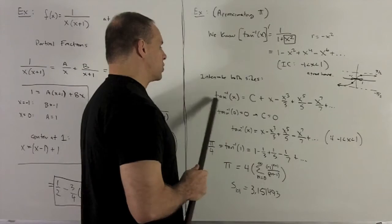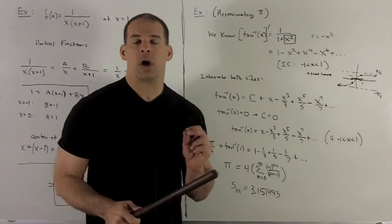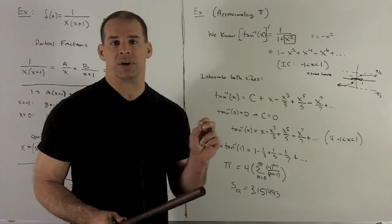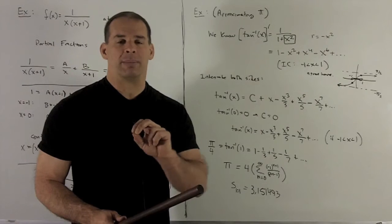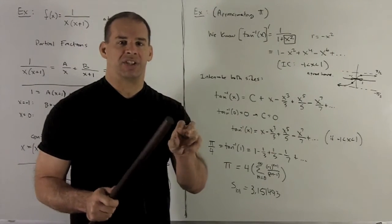So I almost have tan inverse of x as a power series. We just need to get rid of c. So that means knowing tan inverse at one point. Well, we know that the tangent of 0 is equal to 0. So tan inverse is gotten by just reversing the order. For tangent, tangent takes an angle, returns a number.